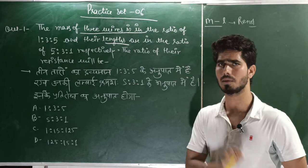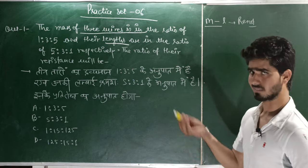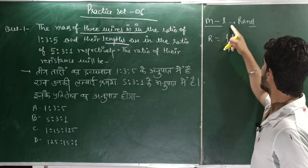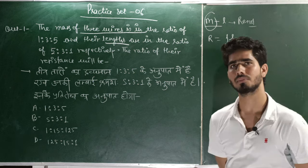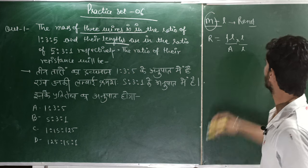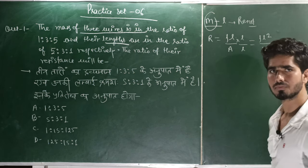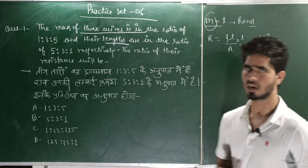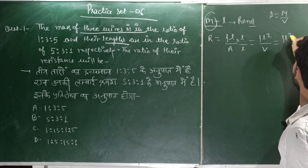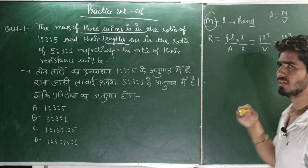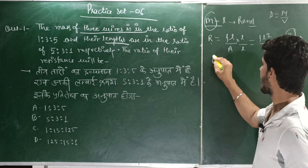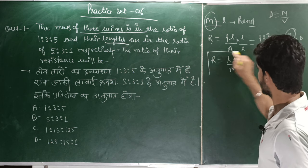We can use a simple resistance-length relation: R equals rho L by A. Now, how does mass relate to length and area? Using the concept of density, we get a very easy relation: R equals L squared by M. This formula connects resistance to length and mass directly.